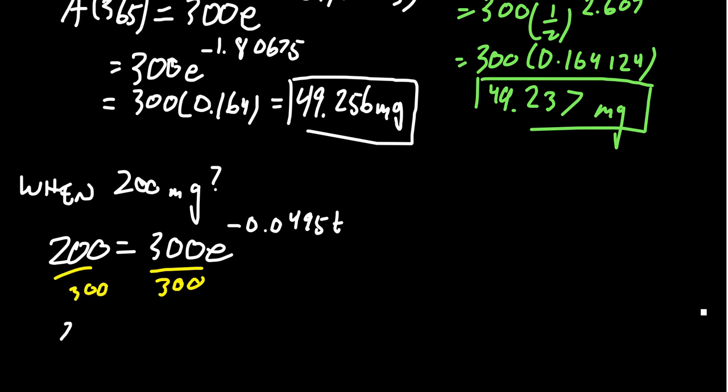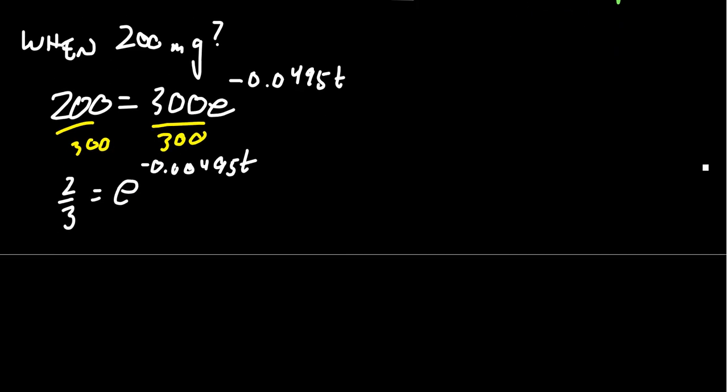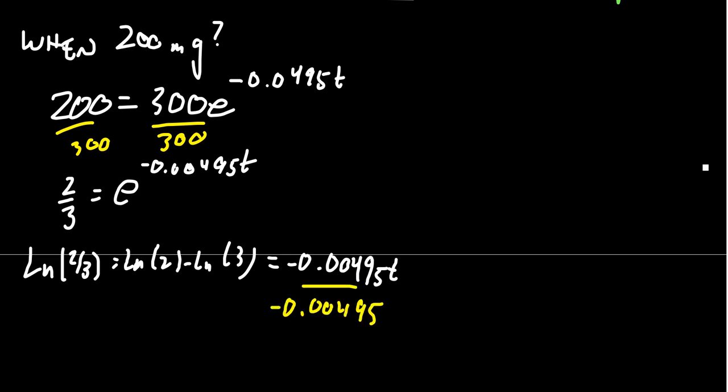We start solving this equation. Divide both sides by 300. The left-hand side turns into two-thirds. We need to take the natural log of both sides. You get ln(2/3), which is the same as ln(2) minus ln(3), and you get negative 0.00495t. We divide by that coefficient, and we end up that t equals 81.9 days. We can probably round that to 82.